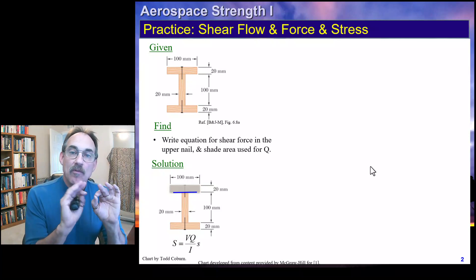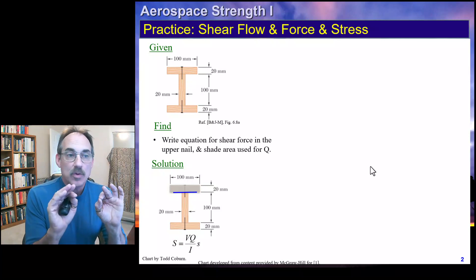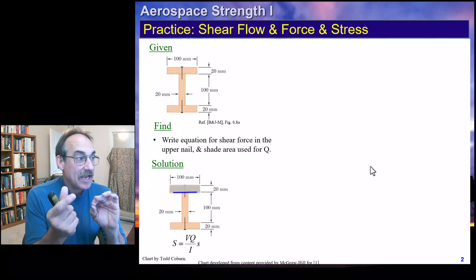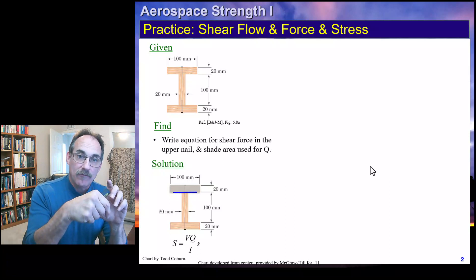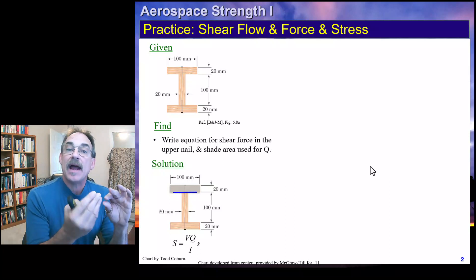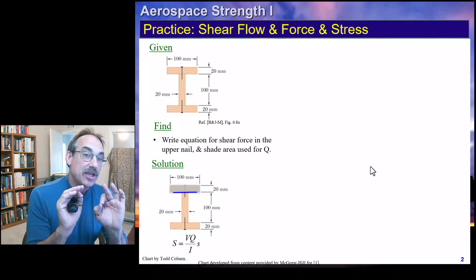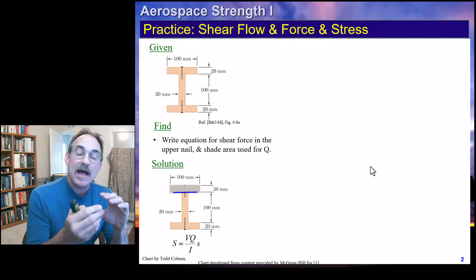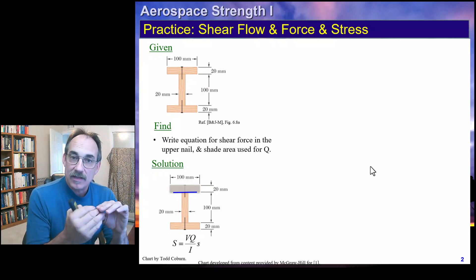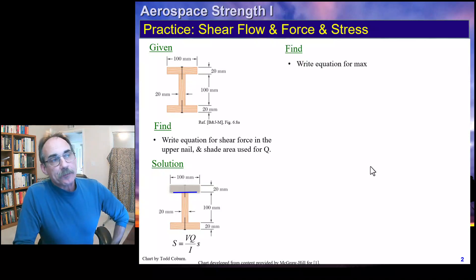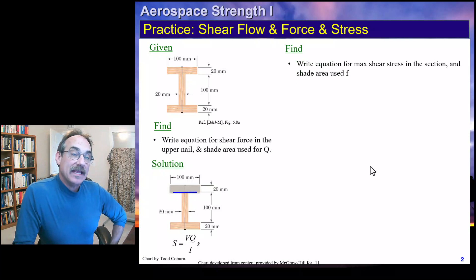The shear force is given by the shear flow VQ/I multiplied by the spacing of these fasteners going into the page. That's the downward shear force V divided by the moment of inertia about the x-axis, times the Q of that area about the centroidal axis, multiplied by the spacing.